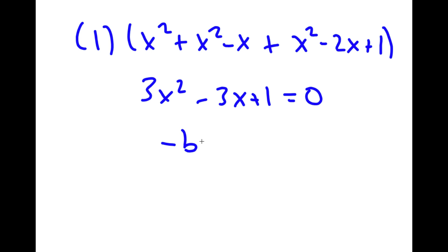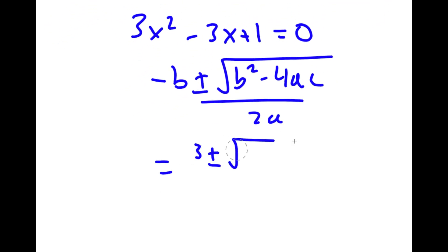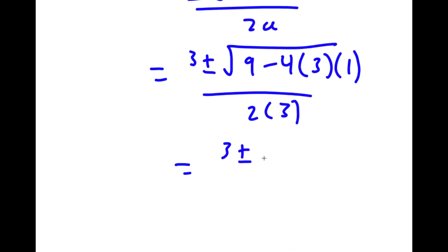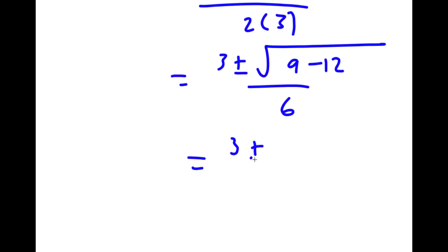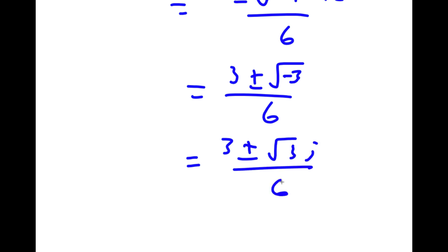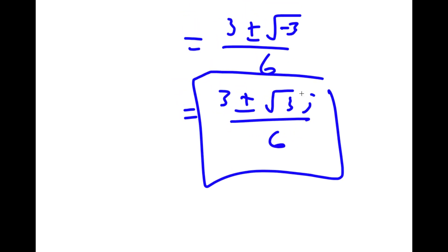To solve this, we can use the quadratic formula: negative b plus or minus the square root of b squared minus 4ac over 2a. That gives us 3 plus or minus the square root of 9 minus 12 over 6, which is 3 plus or minus the square root of negative 3 over 6, which equals 3 plus or minus i times the square root of 3, all over 6. So these are my two solutions.